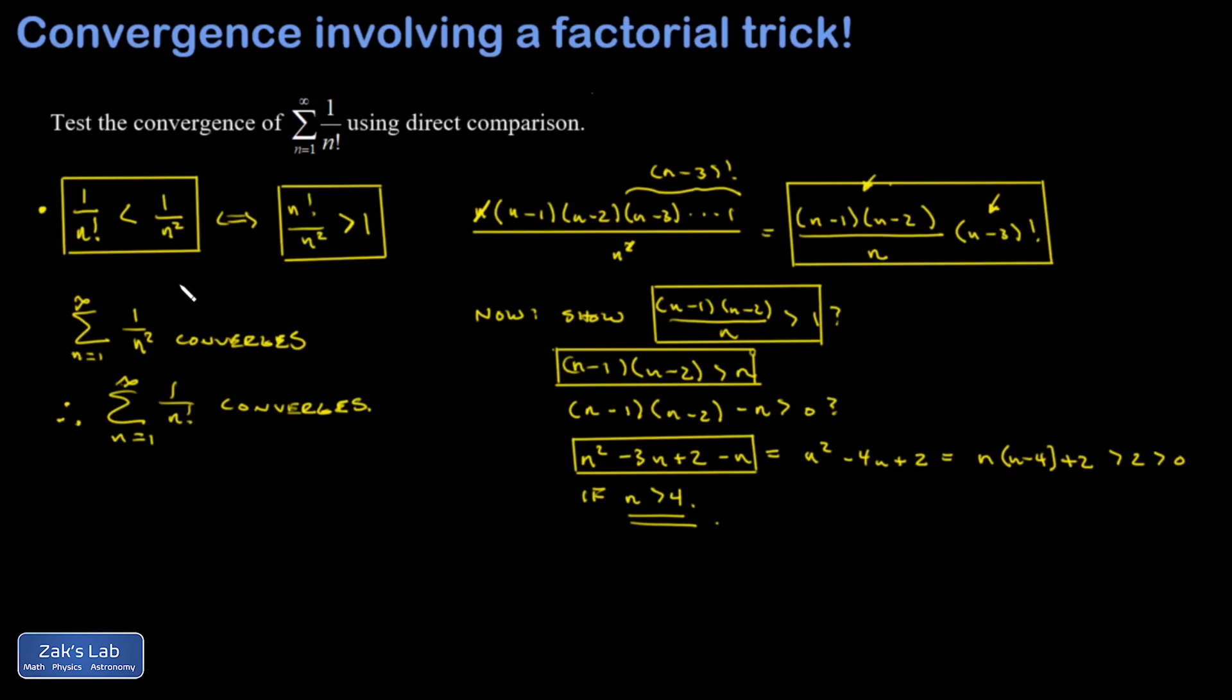And for convergence of a series, all that matters is what happens in the long run, not what happens in the first few terms. So that doesn't affect the proof.